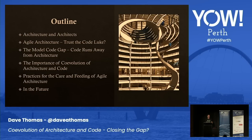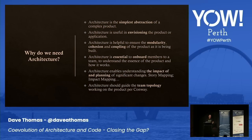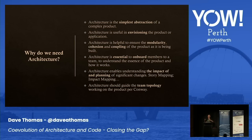I thought I'd do agile architecture with Dolly to show my grandchildren how cool I am. Architecture is really the simplest abstraction of a complex product, which means that architecture, by definition, is a lie. So you could say that architects are managing a set of lies or stories so that people can get the gist of what this is about without getting lost in the detail.